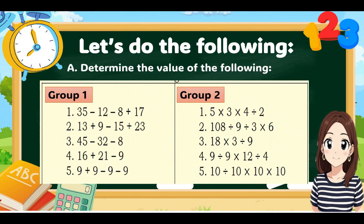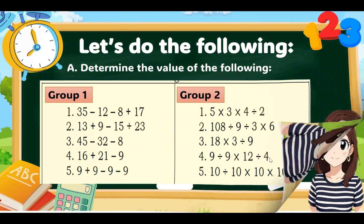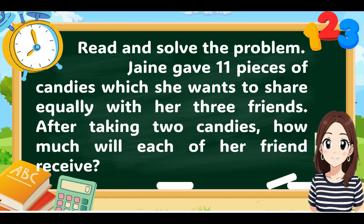Now group yourselves into 2. Determine the value of the following: Group 1 will perform according to the AS rule, and Group 2 will perform according to the MD rule. Read and solve: Jane gave 11 pieces of candies which she wants to share equally with her 3 friends. After taking 2 candies, how much will each of her friends receive?